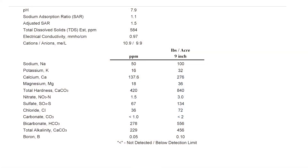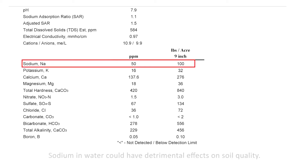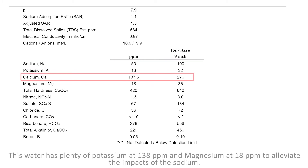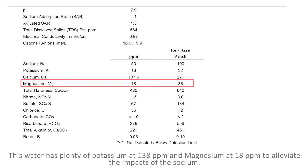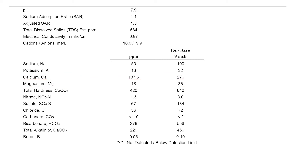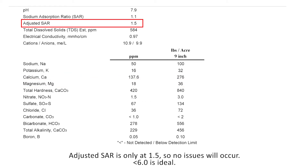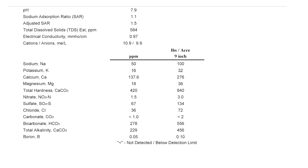Just to recapture some of the other things in the report: we do have 50 parts per million sodium in the water. Sodium, of course, has detrimental effects on soil quality, but luckily we have plenty of potassium at 138 parts per million and plenty of magnesium at 18 parts per million. So when we go back up to the top, our adjusted SAR is only 1.5 — and for good quality irrigation water we want that below 6 — so no issues as far as sodium goes.